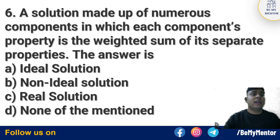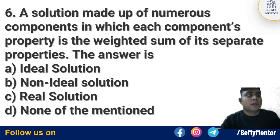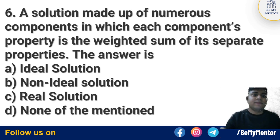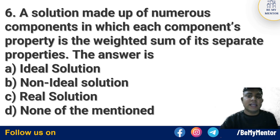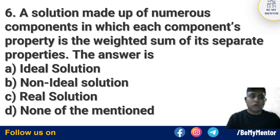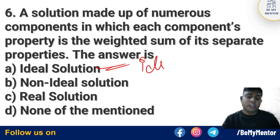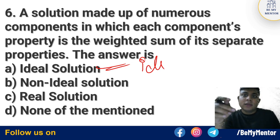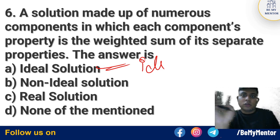Question number 6: The solution is made up of multiple components in which each component's property, when weighted, equals the sum of its separate properties. This means there is a solution with many components, but the individual properties are equal to each component's contribution. We call this an ideal solution. The answer is ideal solution.